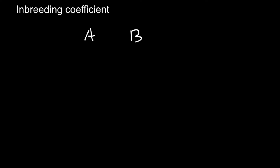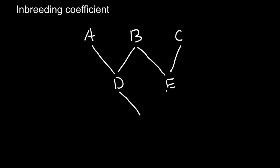So imagine that we have individual A, individual B, and individual C. Individual A and B would produce individual D, and also individual B and C would produce individual E.